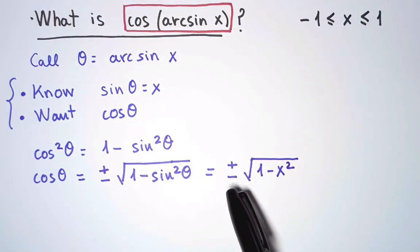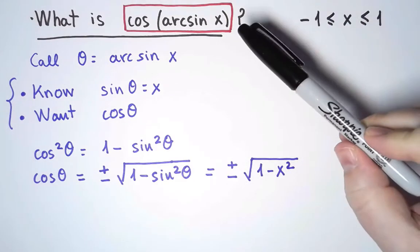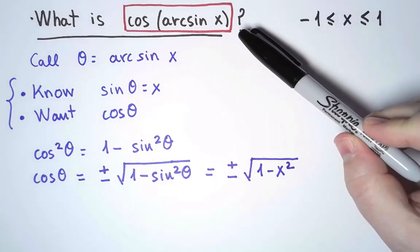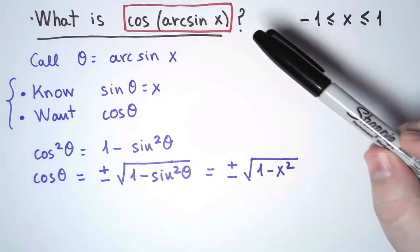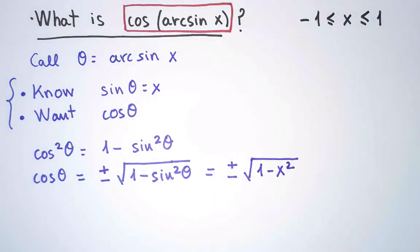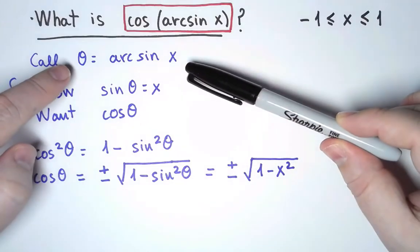But which one is it? Plus or minus? This is a well-defined function. It can only have one value, one sign. And I cannot choose plus for convenience and pretend to be done. I need to justify the sign I choose.